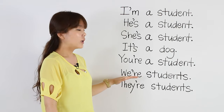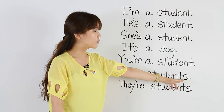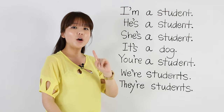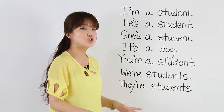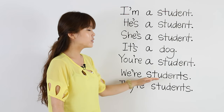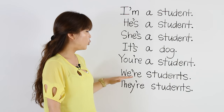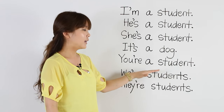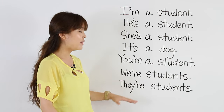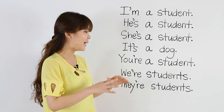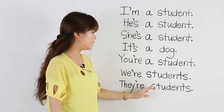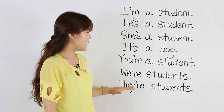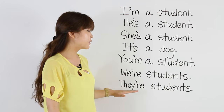Now let's look at we're. We're students. We took out the 'a' and added an 's' because we're means many people — not one student, but many students. So we say we're students. Please repeat: We're students. The same thing goes for they — they means many people or many things, so we put 's' and take out the 'a'. They're students. Please repeat: They're students.